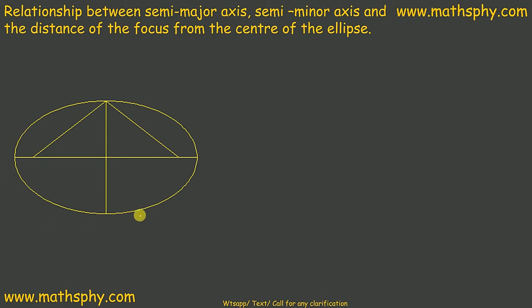Now before getting into the equations for ellipse, we need to understand the relationship between semi-major axis, semi-minor axis, and the distance of the focus from the center of the ellipse. Let's take this major axis as P and Q and minor one as R and S.